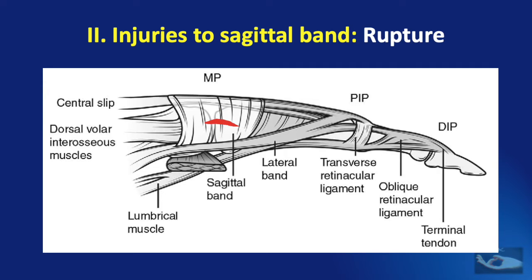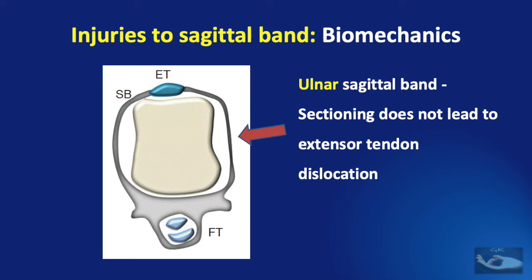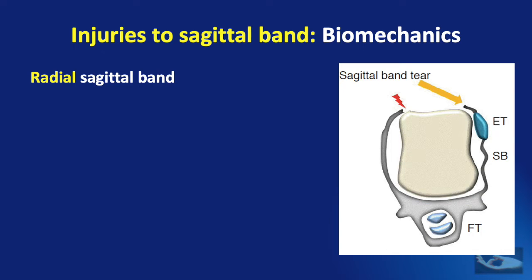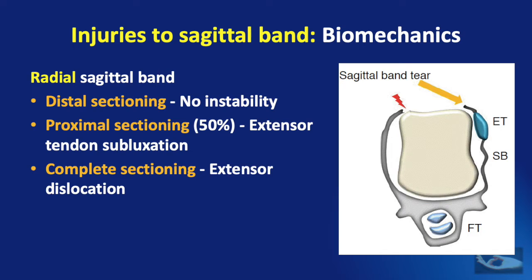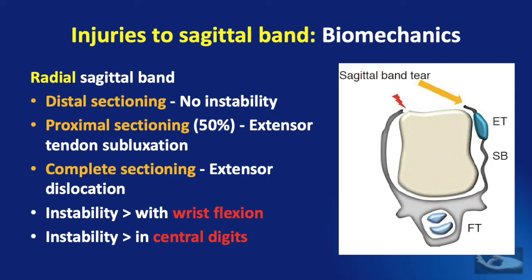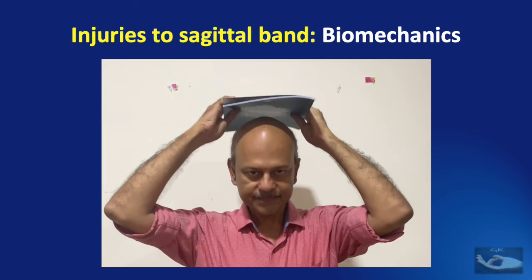Ruptures or lacerations of the sagittal band in a transverse direction do not cause much biomechanical disturbance, but ruptures or lacerations in the longitudinal direction cause problems. Sectioning of the ulnar sagittal band does not lead to extensor tendon dislocation, but sectioning of the radial sagittal band is a major problem. Even in the radial sagittal band, distal sectioning does not lead to instability, but even 50% proximal sectioning leads to extensor tendon subluxation, and complete sectioning leads to extensor dislocation. This effect is greater with wrist flexion and metacarpophalangeal joint flexion.